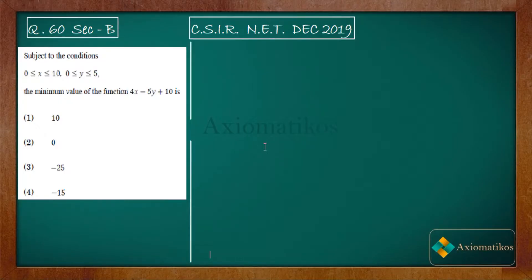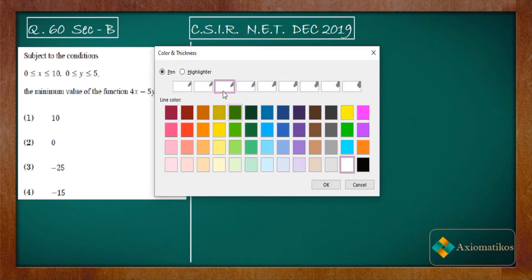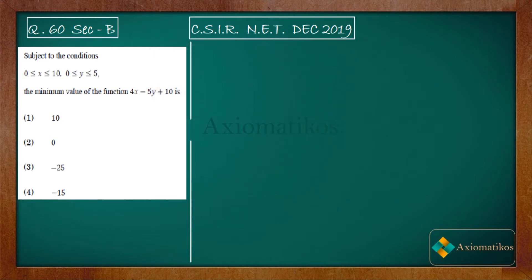Hello dear students, welcome to ExeoMetric course. This video is part of the solution series for CSIR NET December 2019. We are doing problem 60 of your paper — it's the last problem from Section B. We have these conditions in our hand and we have to find the minimum value of a function. It's a very easy problem from linear programming.